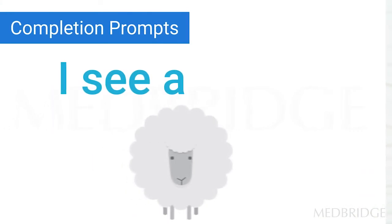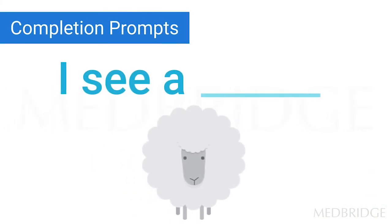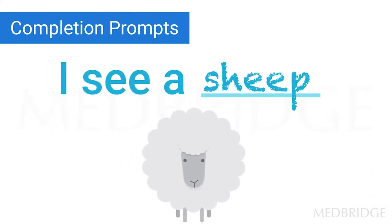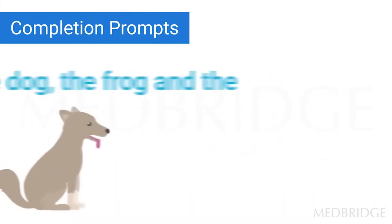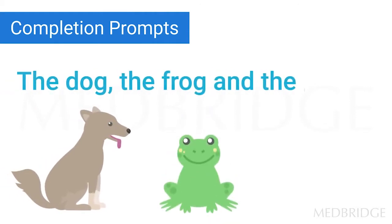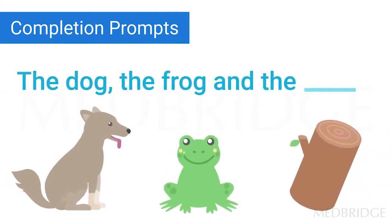The kinds of prompts you may want to try are fill-in-the-blank: 'I see a...' and the child fills in what they see on the page. Or 'the dog, the frog, and the...' — what do you see there that looks like a tree but it's not a tree? It's a log.